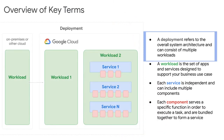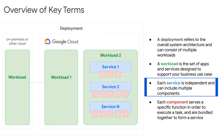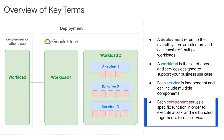Before we get started, let's review some key terms. When we say deployments, we're referring to the overall system architecture supporting your business use case. Deployments can consist of multiple workloads, which are the set of applications, data, virtual machine instances, and services designed to support your business use case. Each service is independent and can include multiple components, with each component serving a specific function in order to execute the task.